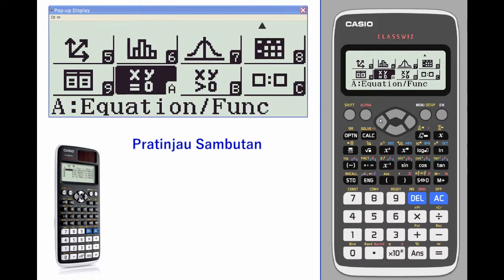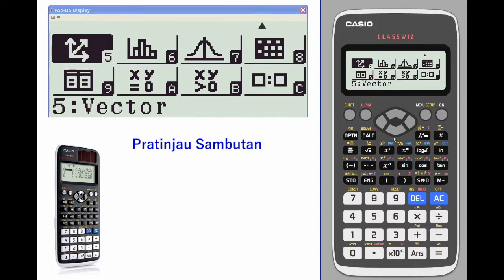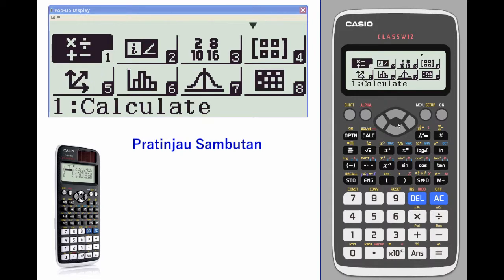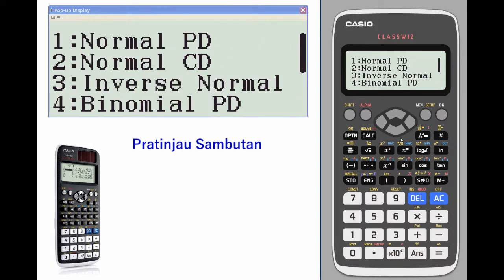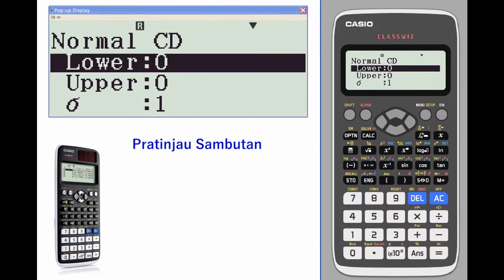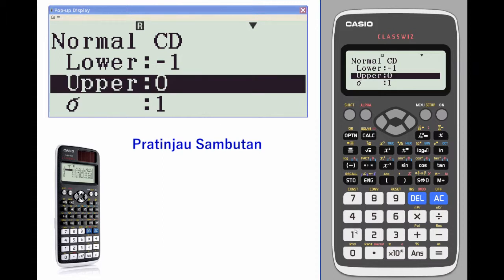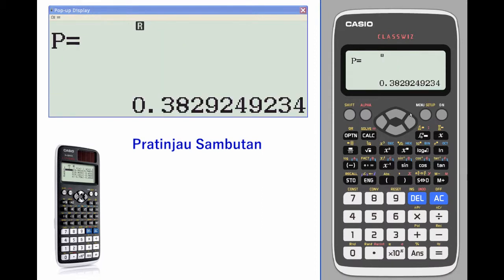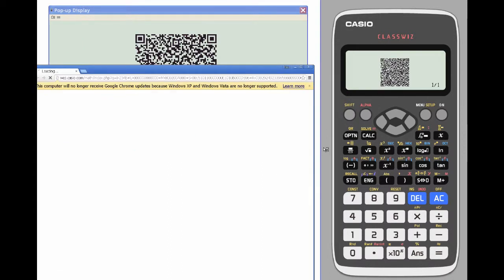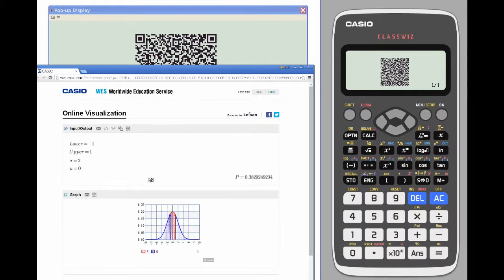You can also create tables and operate with vectors. Again, you have the ability to do QR codes at different places. If we go into distributions and look at a normal cumulative distribution with a lower limit of negative one, upper limit of one, standard deviation of two, and mean of zero, it gives you the probability. If you click QR code, it will give you a graphical representation of that p-value.